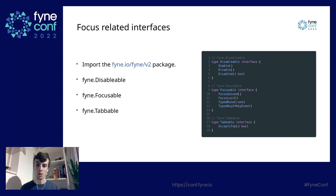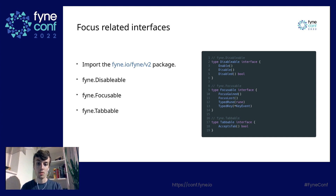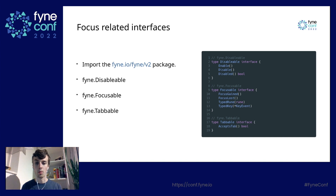For focus-related interfaces, we first have Disableable, which has Enable, Disable, and Disabled methods, allowing a widget to indicate if it's enabled or disabled. The focus manager uses this to ensure disabled widgets do not gain focus. We also have the Focusable interface with four methods: FocusGained, called when the widget receives focus; FocusLost, called when it loses focus; TypedRune, which receives the character typed on the keyboard; and TypedKey, which provides a key event with the actual key.